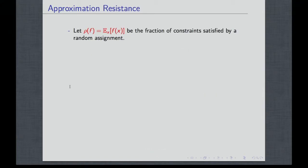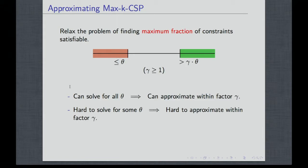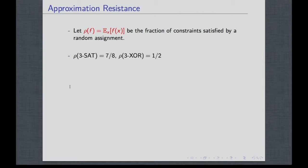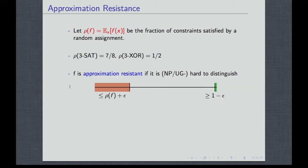Approximation resistance comes from the maximum possible gap you can have between the red and the green regions here. Let's define rho of f, which is a parameter measuring: if you plug in a random assignment, what's the probability that a constraint will be satisfied? For 3SAT it's 7/8, for XOR it's 1/2, and so on. We call a function f approximation-resistant if it's hard to distinguish between when you can satisfy almost all constraints or no more than rho of f. The way rho of f is defined, it's trivial to satisfy rho of f fraction of constraints just by using a random assignment. More precisely, f is approximation-resistant if for every epsilon greater than 0 we have an inapproximability result of this form.